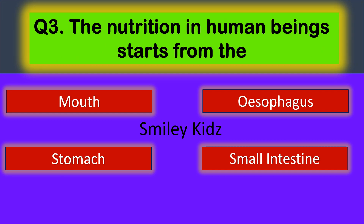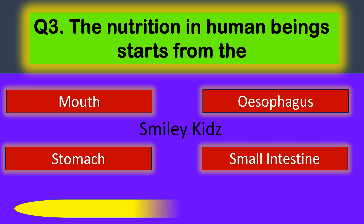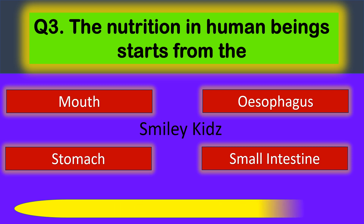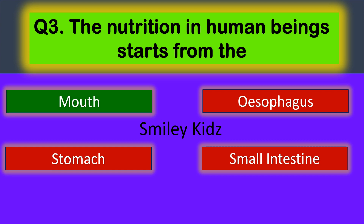Question number 3. Nutrition in Human Being starts from the... Your options are Mouth, Esophagus, Stomach, and Small Intestine. The correct answer is Mouth. Nutrition in Human Being starts from the Mouth.